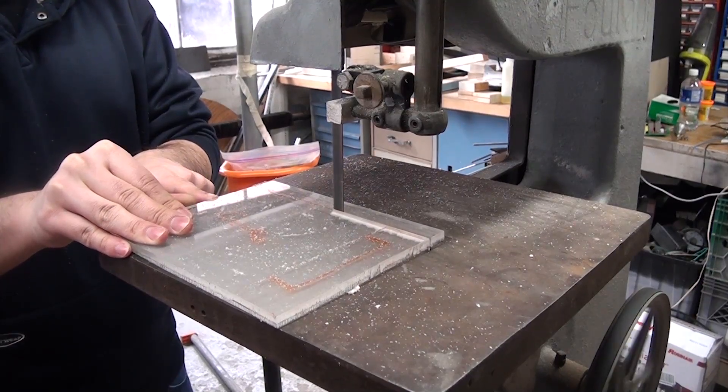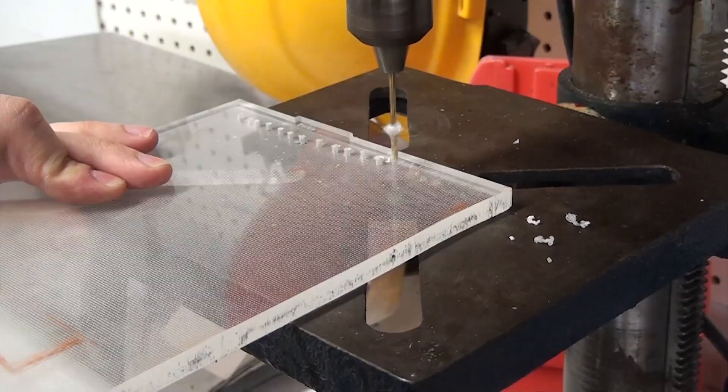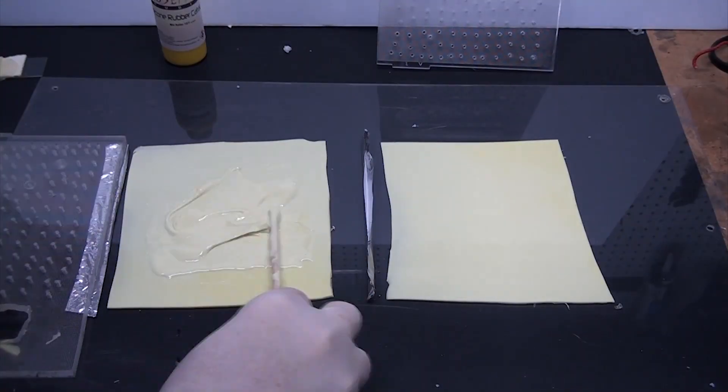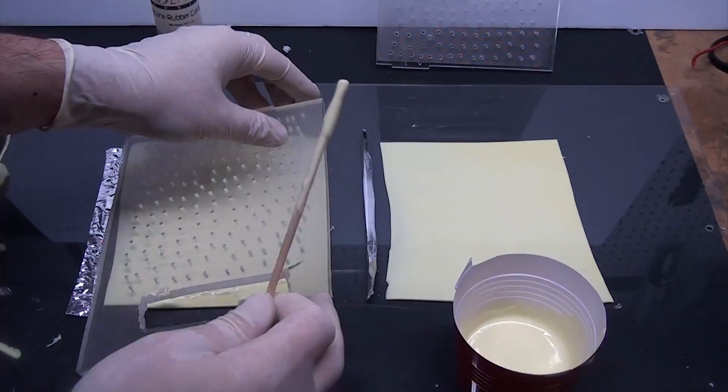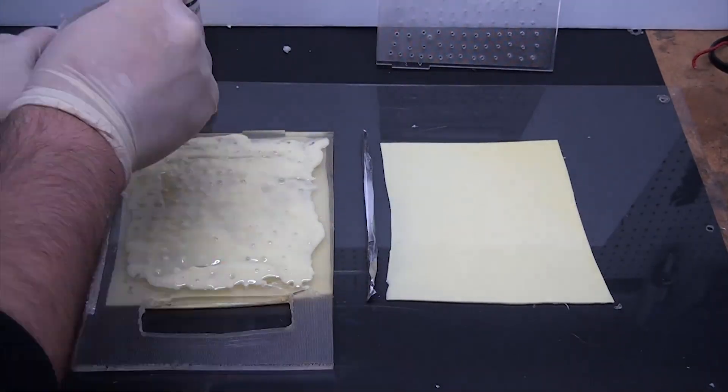I made the backing out of some acrylic, and to adhere the silicone to it I drilled a ton of tiny holes. Silicone only really sticks to itself, so this way I could put some fresh silicone on the back of the gecko pad, put the backing on top, and then pour more silicone to fill the holes and make a thick layer to anchor everything together.